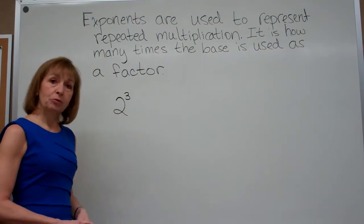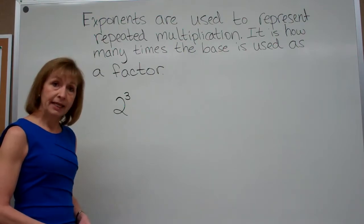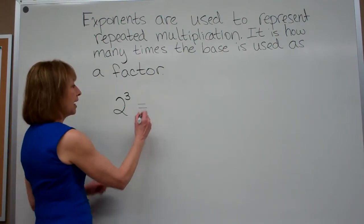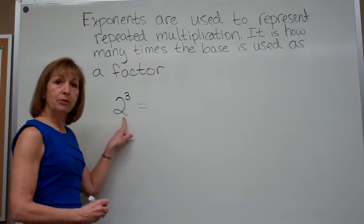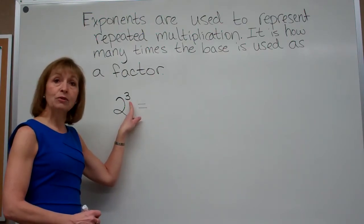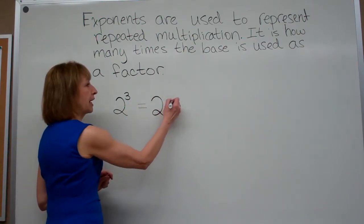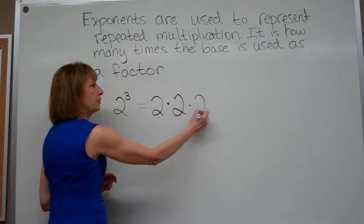If they ask me to write this expression without using exponents, they want me to write the multiplication out. So here, I notice that 2 is the base, I'm going to use that repeatedly as a factor, and 3, the exponent, tells me that I'm going to use 2 as a factor 3 times. So I have 2 times 2 times 2.